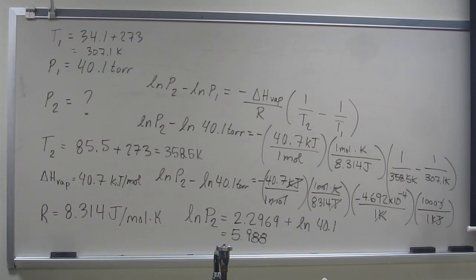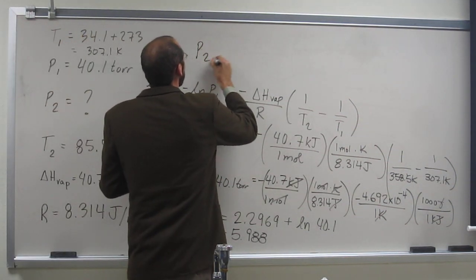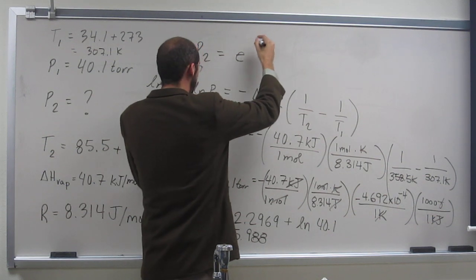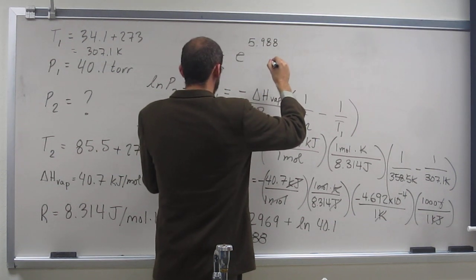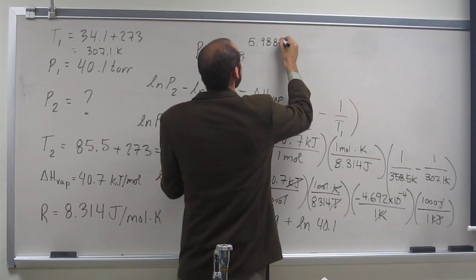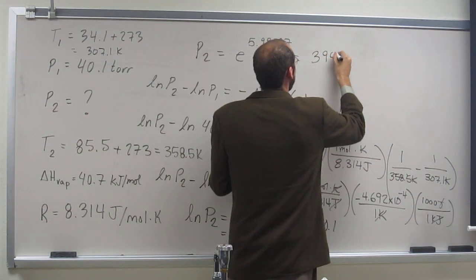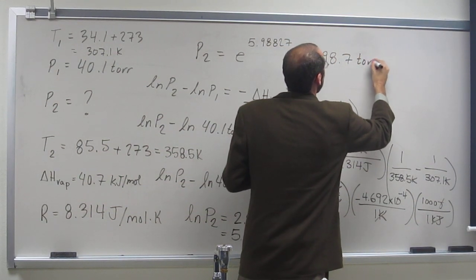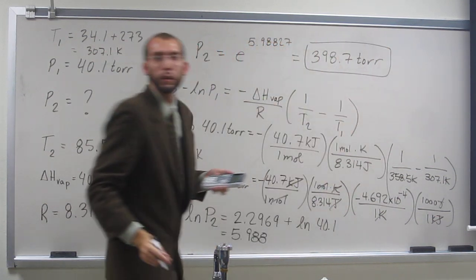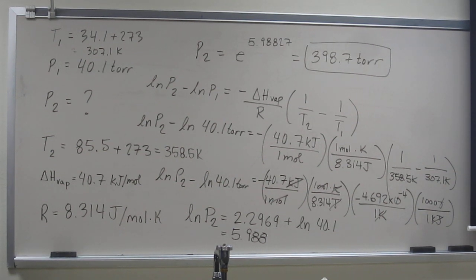Okay, and I got, so in other words, what did we do? We did P2 equals E to the 5.98827 or whatever. And so when we did that, we get 398.7 torr. Is everybody okay with that?